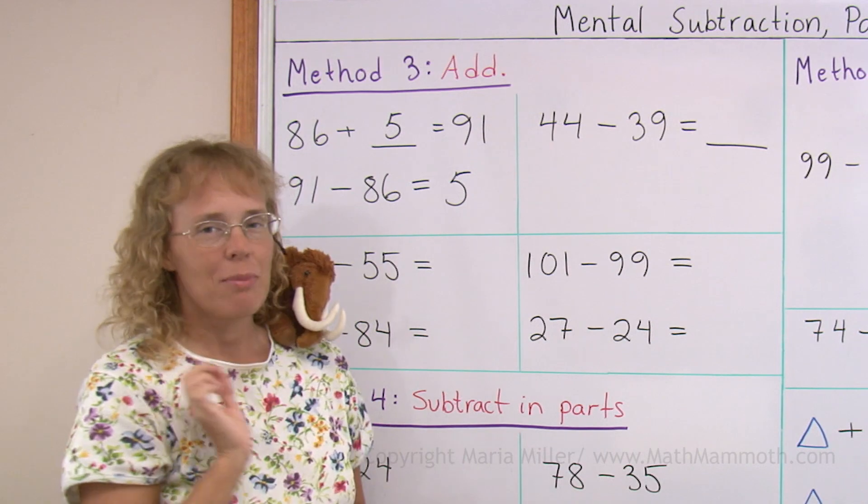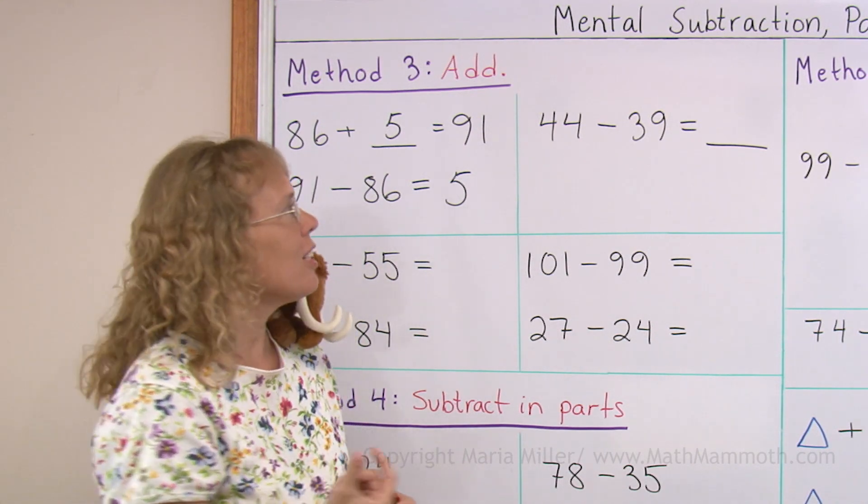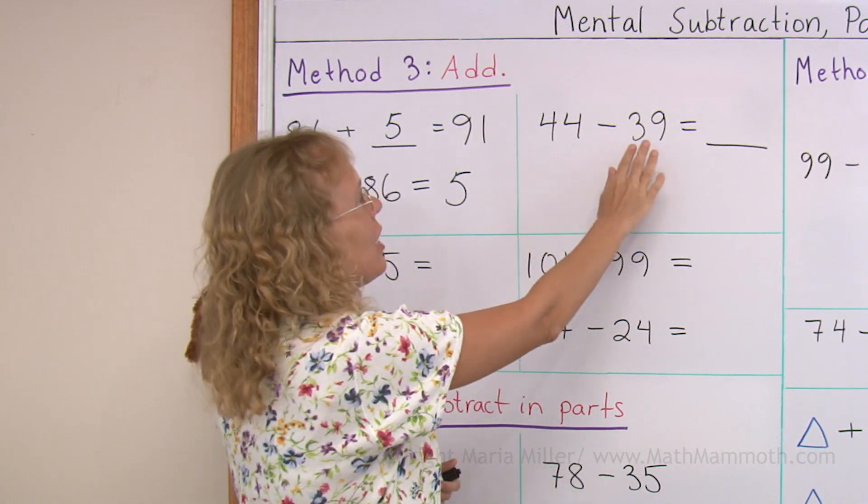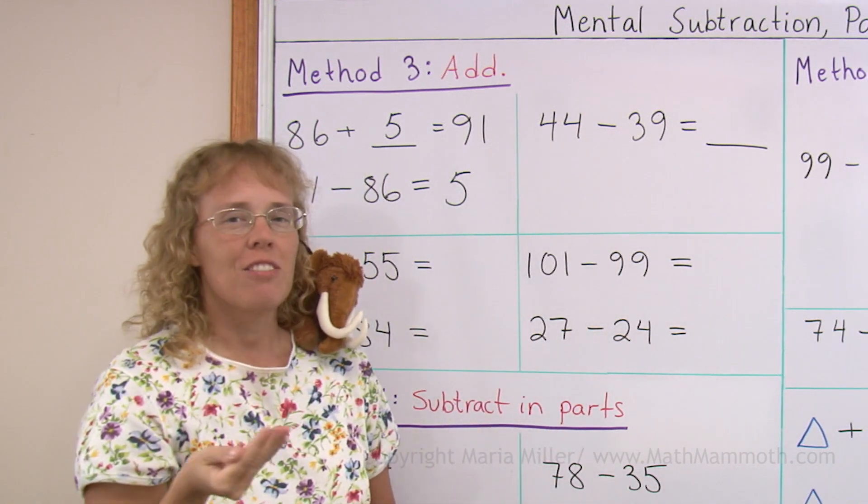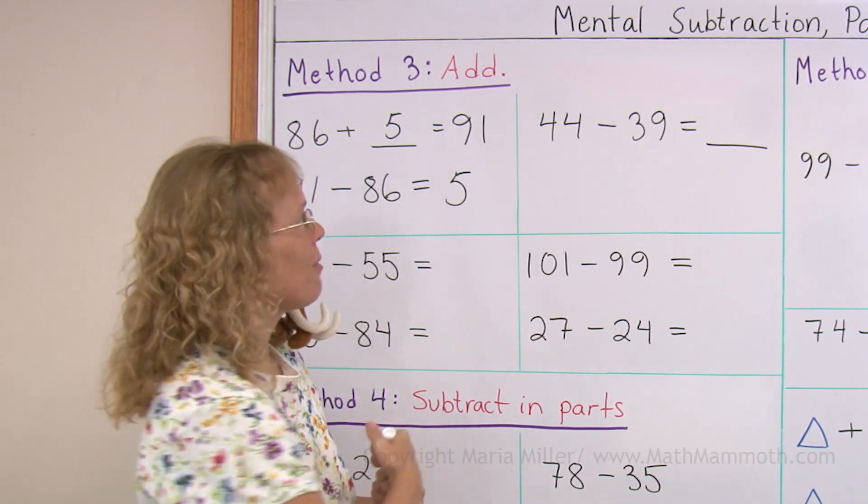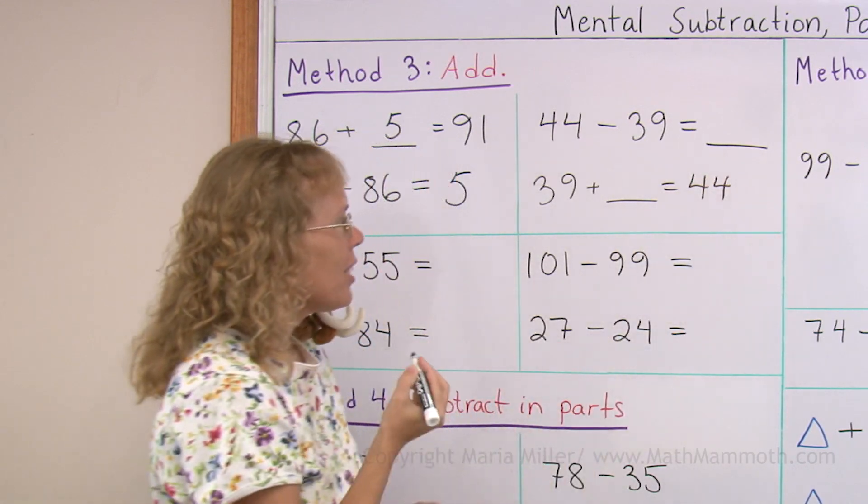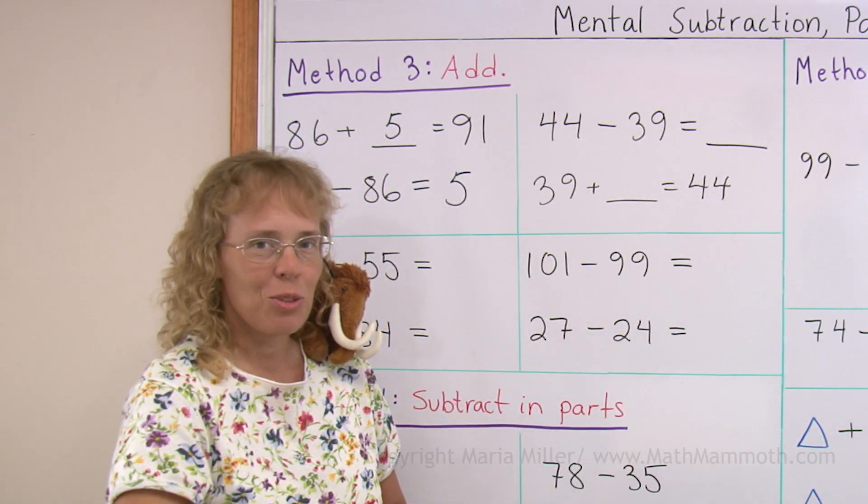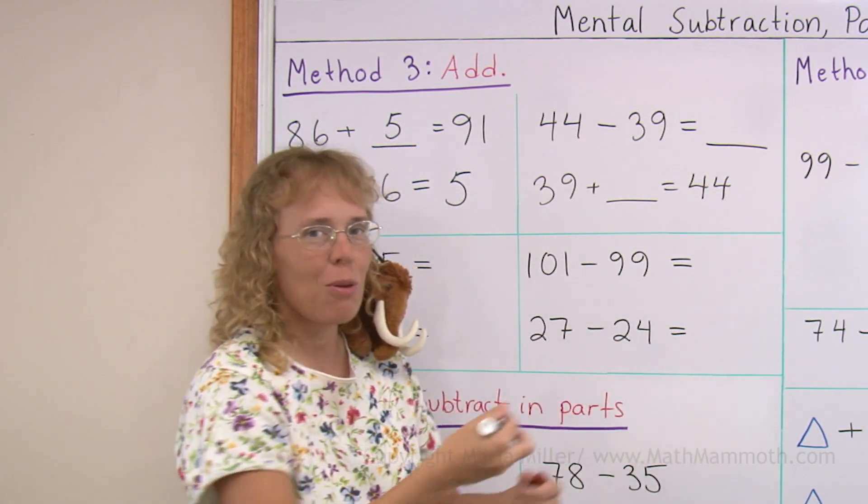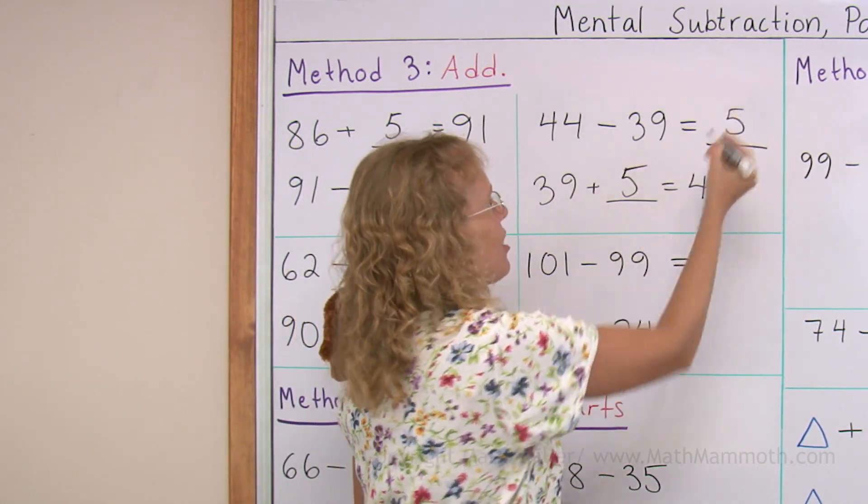And here's another. This method works the best when the numbers are close to each other such as here 44 and 39. So you can think of 39 plus how many more makes 44. Let me write that. It's the how many more addition. You think that way. You are at 39 and you make jumps to 44. So how many jumps? The answer is 5. So the answer is 5 to the subtraction too.